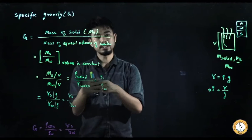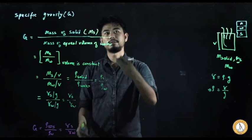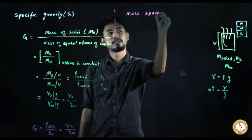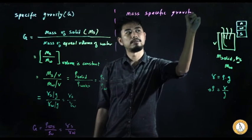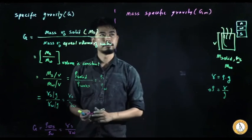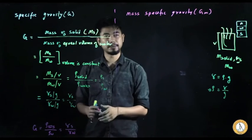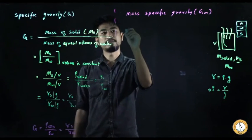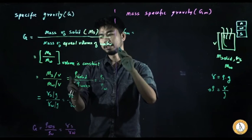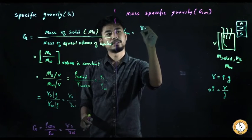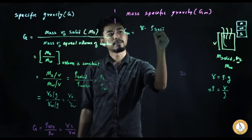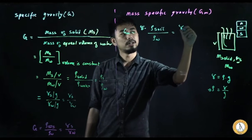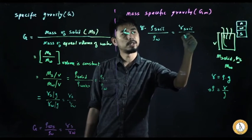Next, let's discuss mass specific gravity, written as Gm. Similar to specific gravity G, mass specific gravity Gm is the ratio of the density of soil to the density of water, or equivalently, the unit weight of the soil divided by the unit weight of the water.